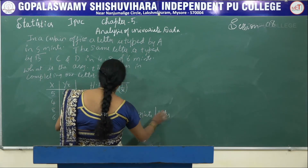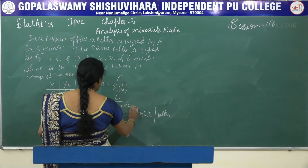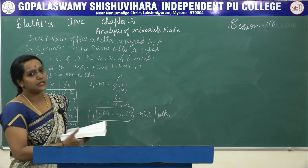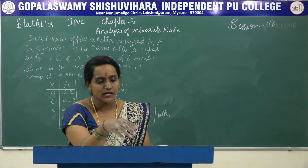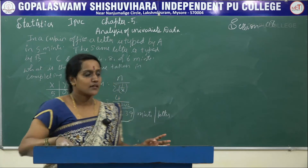So on an average, they will take 5.39 minutes to type the same letter. Since we are finding the average time for the same work, harmonic mean is the appropriate measure.